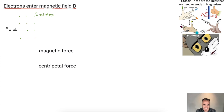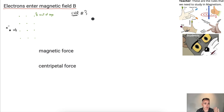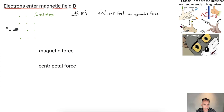These are electrons, so they're negative particles. That means I'm going to use left-hand rule number three because they are negative. I'm going to point my fingers out of the page — that's the direction of the magnetic field as I've drawn it. I put my thumb in the direction of the velocity, which is to the right. My palm points upwards, so the electrons will feel a force upwards. Because they feel this upward force continuously, they're going to end up moving in a circular path — they're going to curve.